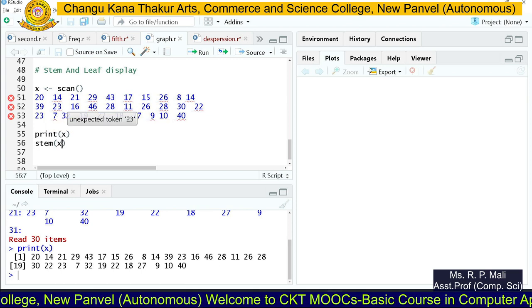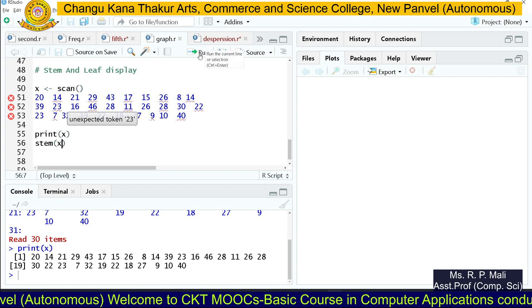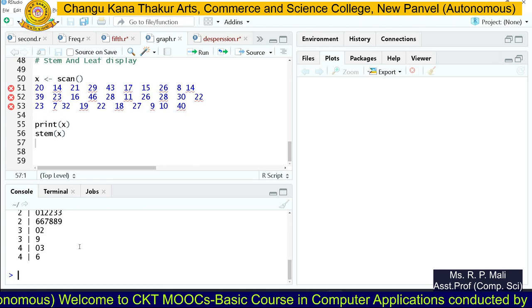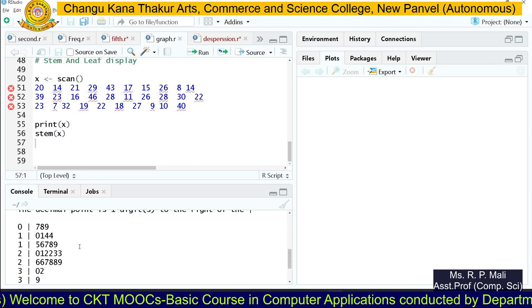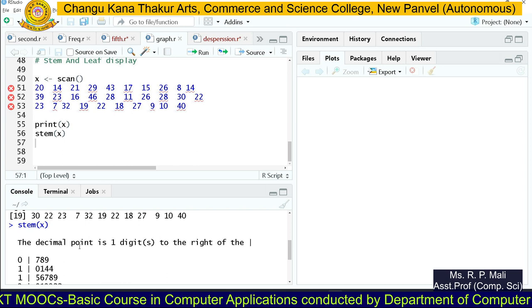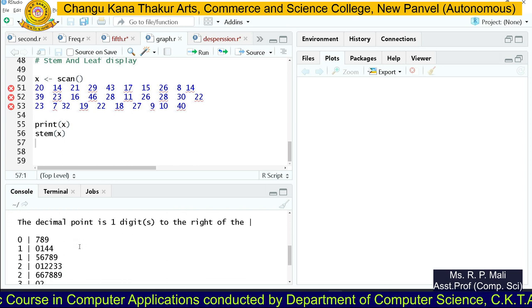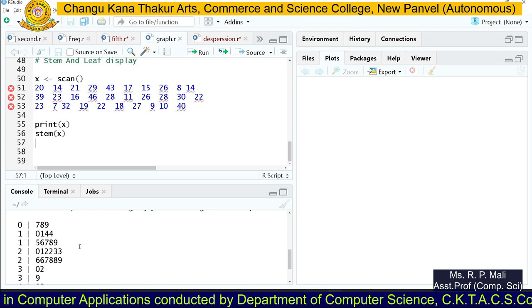I'm going to execute this code. Here you are able to see the stem and leaf plot for your x variable in which 30 data terms are stored. As I explained in theory, we're going to arrange the stem part in ascending order.